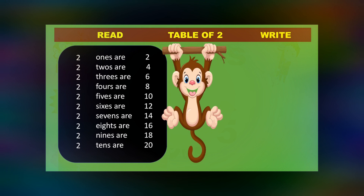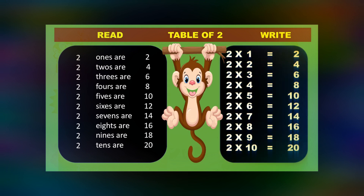Let's repeat once again. 2 1s are 2. 2 2s are 4. 2 3s are 6. 2 4s are 8. 2 5s are 10. 2 6s are 12. 2 7s are 14. 2 8s are 16. 2 9s are 18. 2 10s are 20.